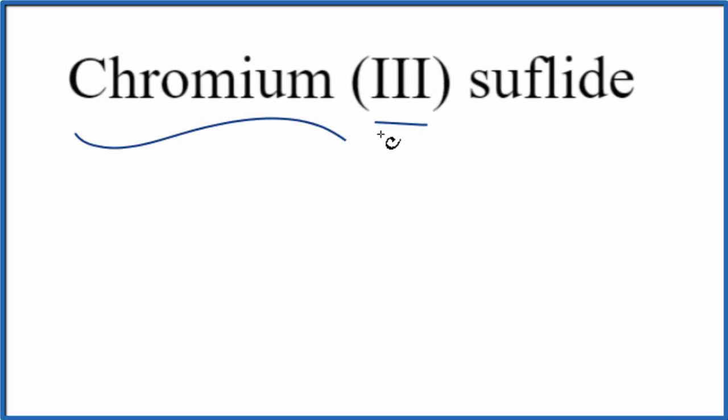To write the formula for chromium-3 sulfide, let's first write the element symbol for chromium. That's just Cr. And this 3 here, this Roman numeral, tells us we have a transition metal and that the charge is going to be 3+. So we already know that.